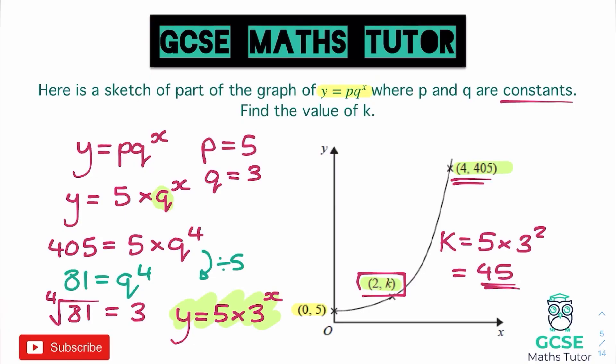This used a very similar process to the previous question — substituting coordinates into the equation to find missing values. The extra step was using logic at the y-intercept: it had to be multiplied by 5 to move it up there, giving p = 5. Then we subbed in one coordinate to find q, then used the full equation to find k. These are quite tricky questions, but there's one more for you to try.